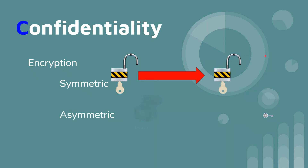With asymmetric it's a little different because you have a public key and a private key. The way I like to think of it is the public key being like an automatic lockbox — you wrap your message in it — and then the private key is the only thing that can open that box. These keys are mathematically related such that when you encrypt with a public key, only the private key can decrypt it, and vice versa.